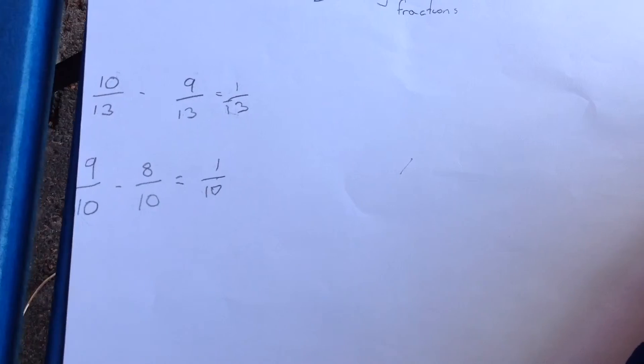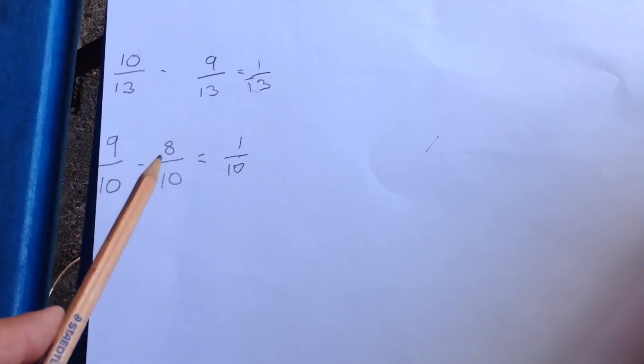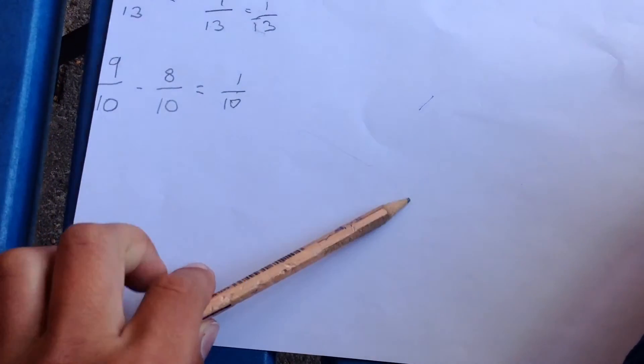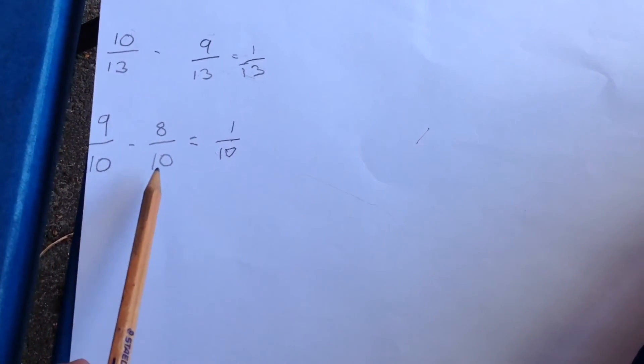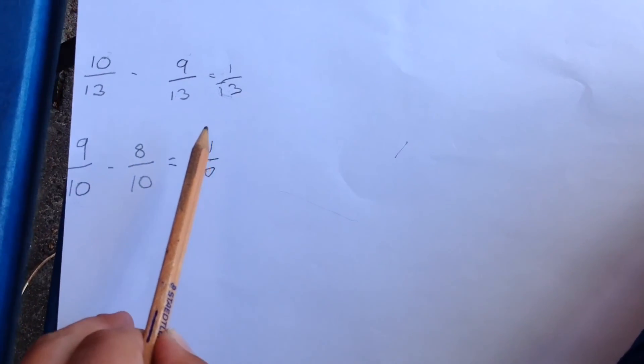This next question, the 9 and the 8, the top numbers, this would equal 1. The bottom parts, the 10 and the 10, you leave as they are. This would equal 1 tenth.